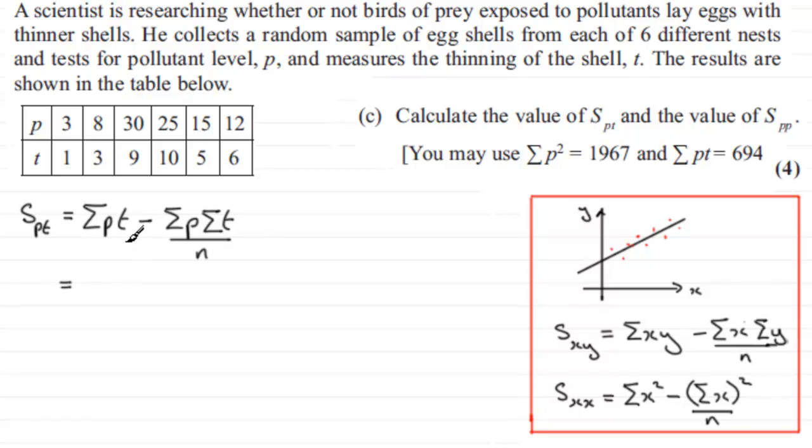So all we've got to do now is just put in our values. They gave us Sigma PT over here: 694. But when it comes to Sigma P and Sigma T, we haven't got those values here; we need to work them out from the table. So Sigma P, if we just sum the top line here, add up 3, 8, 30, 25, 15, and 12, you find you get 93.